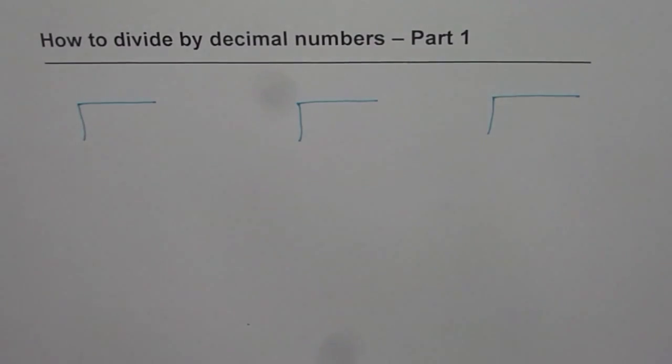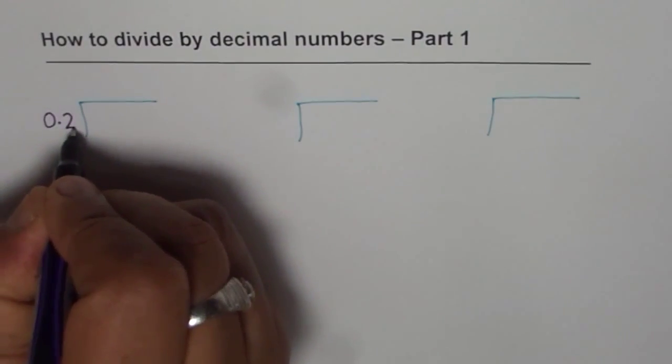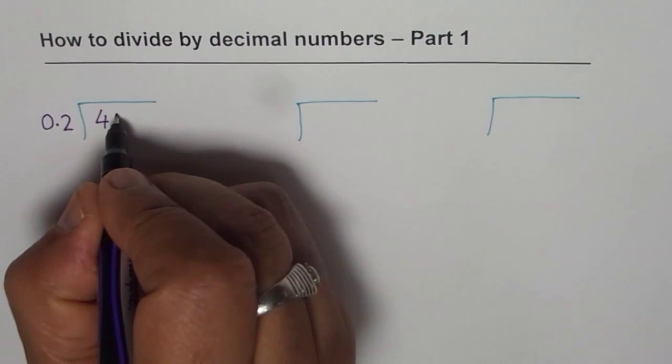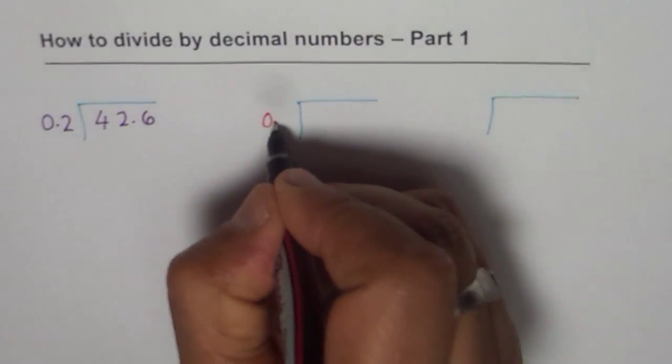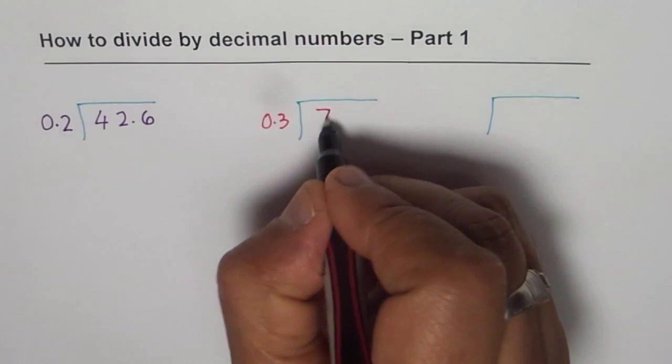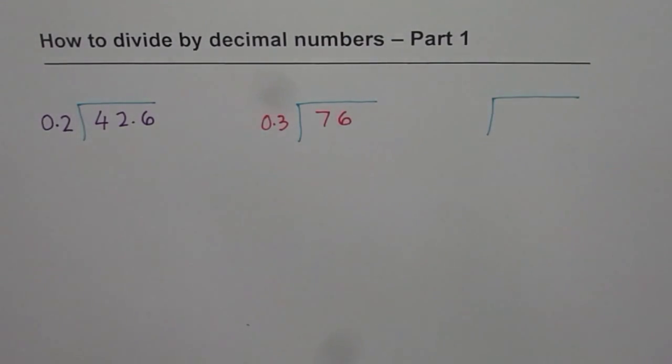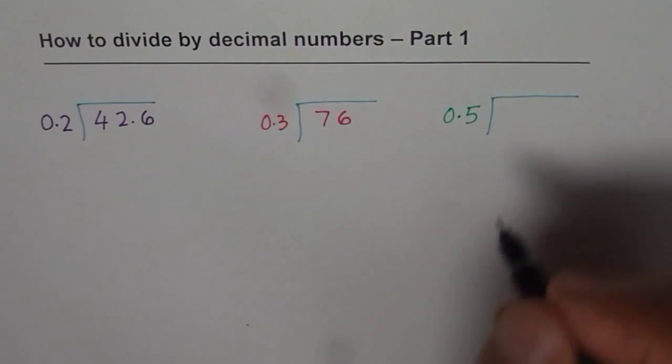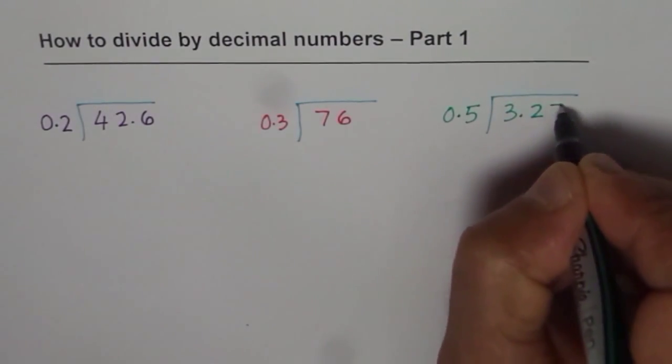The idea is to understand the process and therefore I am taking very simple questions. Let's divide by 0.2, so that is the decimal number, and let me write down a number here, let's say the number is 42.6. The next one we can take, let's divide by 0.3, and let me take a number which is 76, no decimal this time. Now the third one, we will divide by 0.5, and in this case we will take a number which has two decimal places, let's say it is 3.27. So these are three different cases.